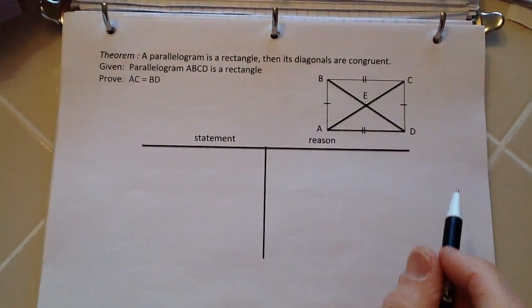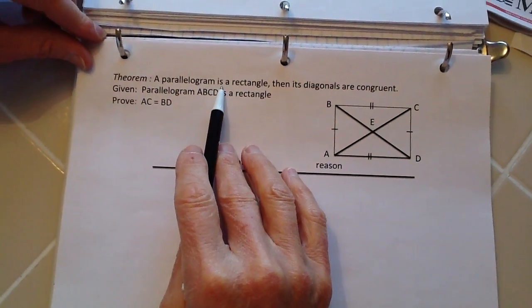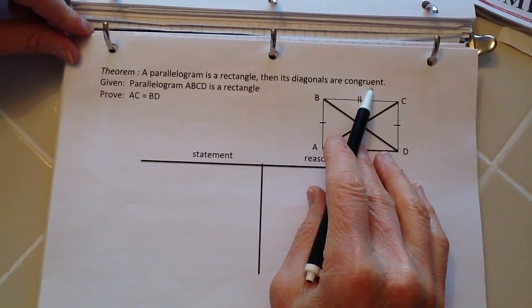All right, today we're going to talk about the theorem: if a parallelogram is a rectangle, then its diagonals are congruent.